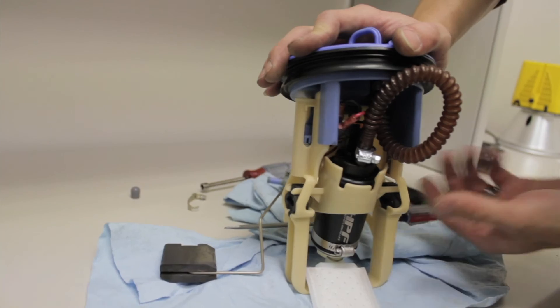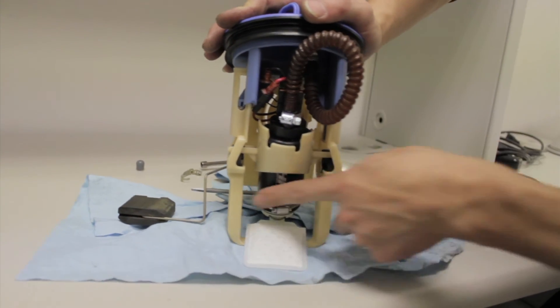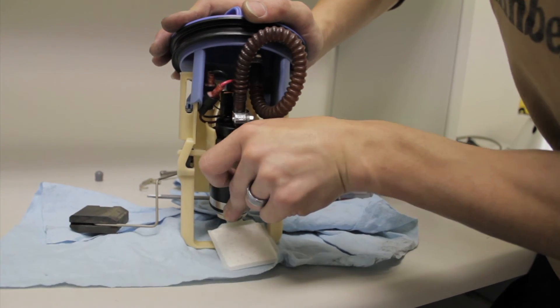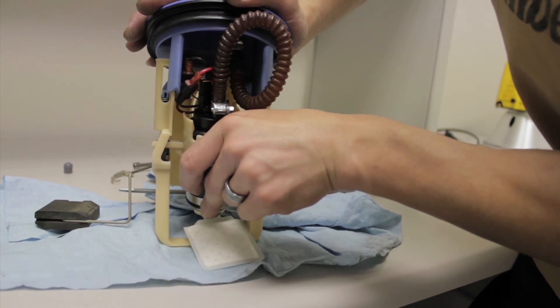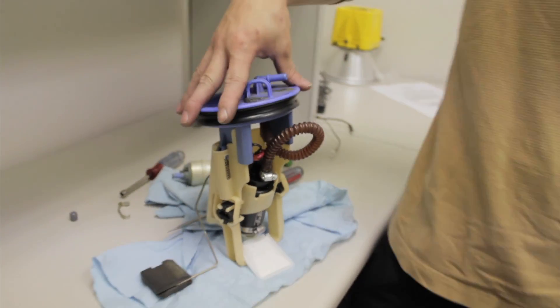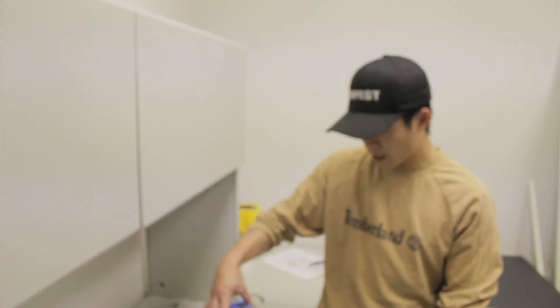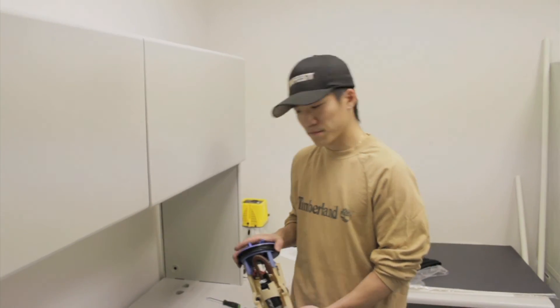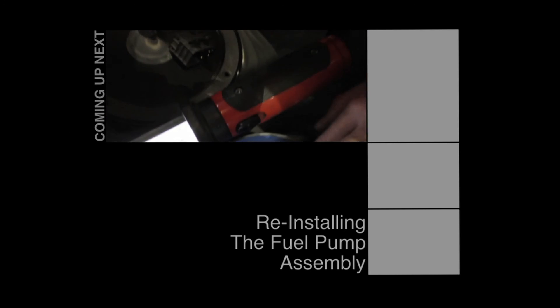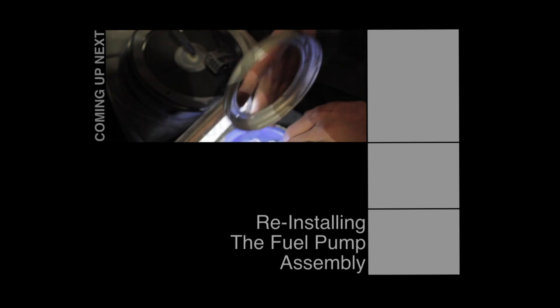As you can see, everything is free to move and due to the design of the carrier, the pump cannot rotate outside of this range. So what we'll do after this is reinstall this back into the vehicle and we would have done our fuel pump mod. There you go. Thank you.